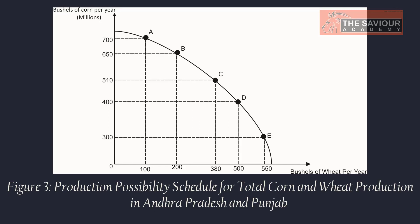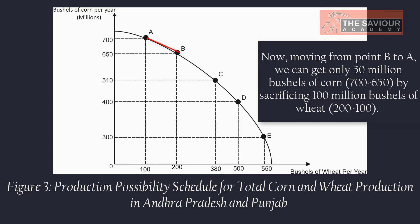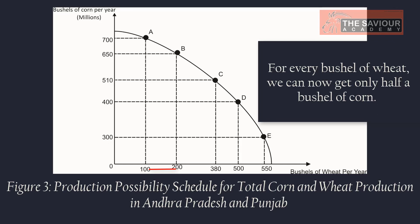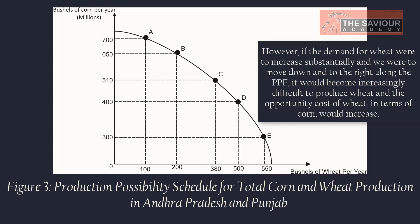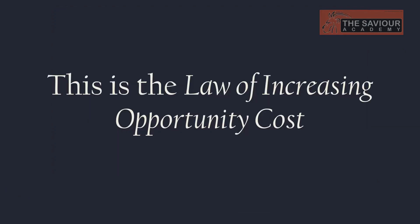Moving from point B to A, we can get only 50 million bushels of corn (700 minus 650) by sacrificing 100 million bushels of wheat (200 minus 100) — for every bushel of wheat we can now get only half a bushel of corn. If demand for wheat increases substantially and we move down and to the right along the PPF, it becomes increasingly difficult to produce wheat and the opportunity cost of wheat in terms of corn rises. This is the law of increasing opportunity cost.